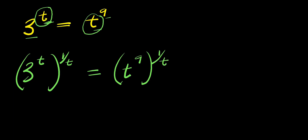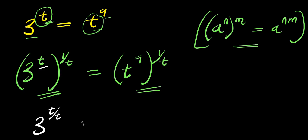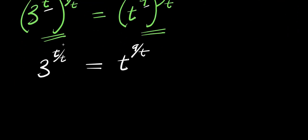Now let's consider this index rule: if you have a to the power of n, raised to the power of n, this equals a to the power of n times n. I can apply this identity right here. So what I'm going to have will be 3 to the power of t times 1 over t — that is t divided by t — and this equals t to the power of 9 times 1 over t. So right now I can cancel this out, and I have 3 equals t to the power of 9 over t.